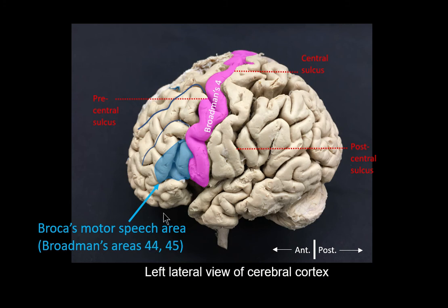What does the Broca's speech area do? It is basically concerned with the motor aspect of speech. It is responsible for bringing about the formation of words through its connections with the adjacent primary motor areas, such as the motor areas inside the precentral gyrus, which are concerned with the movements of the muscles of the larynx, the mouth, the tongue, the soft palate, and so on.